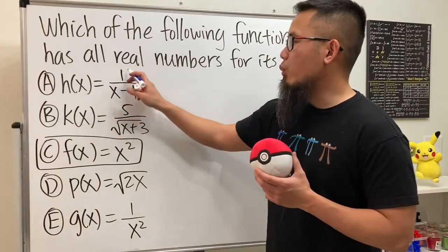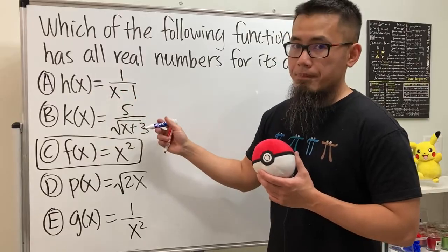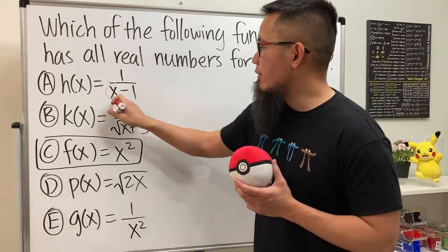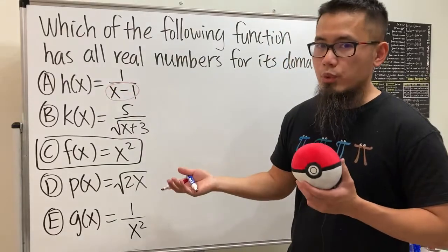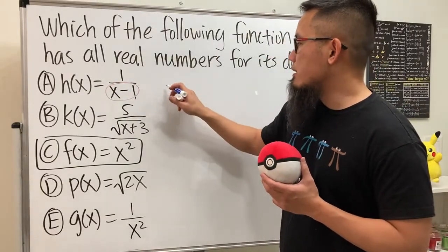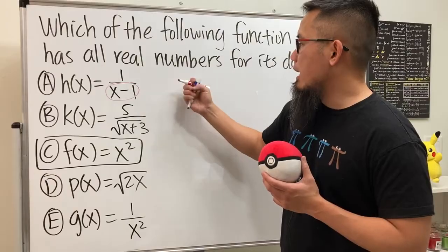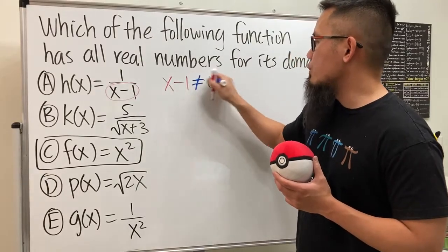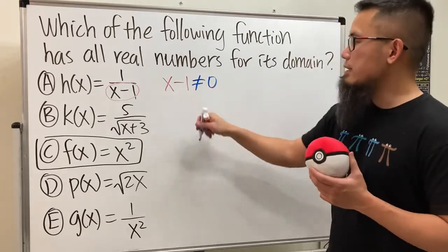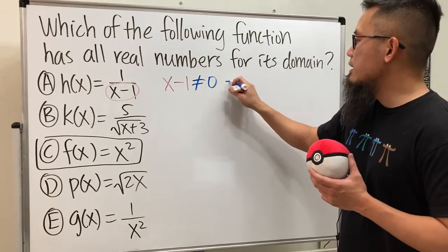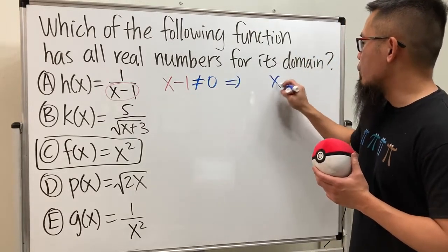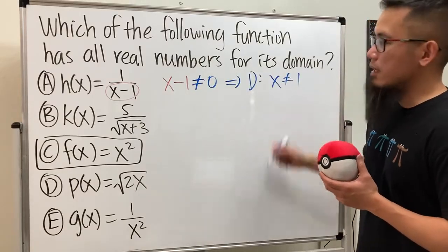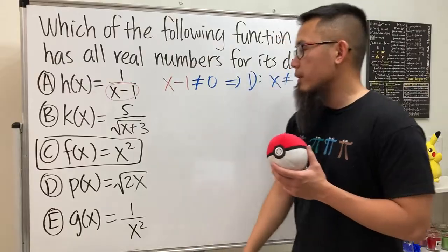For the first choice, h(x) = 1/(x - 1), we have x in the denominator, so we have to make sure the denominator is not equal to 0. We set x minus 1 cannot equal 0, then solve for x by adding 1 to both sides. This means x cannot equal 1, so the domain is: x cannot equal 1.